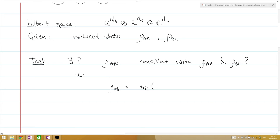And what does consistent mean? Well, consistent means that rho AB is found by tracing out subsystem C from rho ABC, and rho BC is found by tracing out subsystem A from rho ABC.